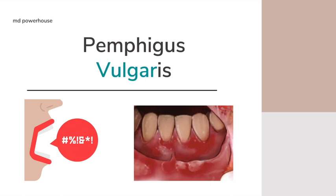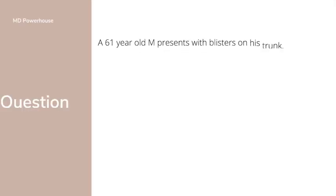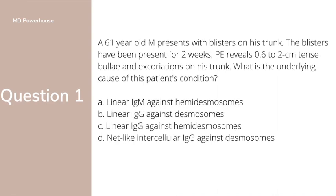Question 1: A 61-year-old man presents with blisters on his trunk. The blisters have been present for two weeks. Physical exam reveals 0.6 to 2 cm tense bullae and excoriations on his trunk. What is the underlying cause of this patient's condition? A. Linear IgM against hemidesmosomes. B. Linear IgG against desmosomes. C. Linear IgG against hemidesmosomes. Or D. Net-like intercellular IgG against desmosomes. If you want a moment to think about the answer, pause it here. The answer is option C — linear IgG against hemidesmosomes.